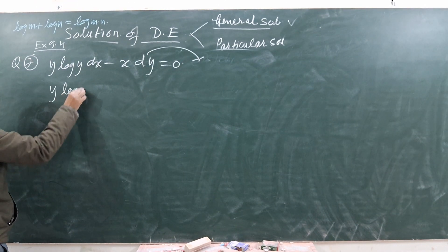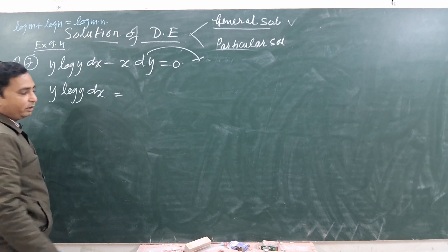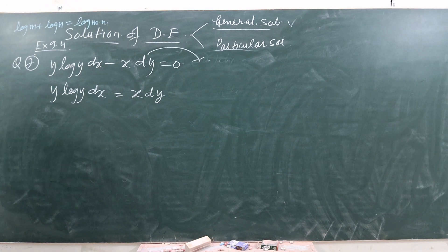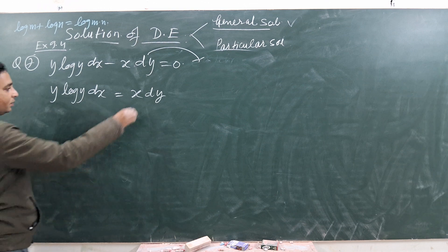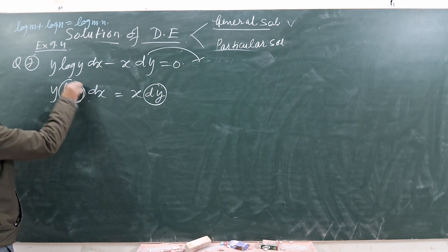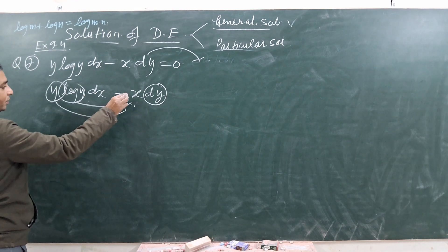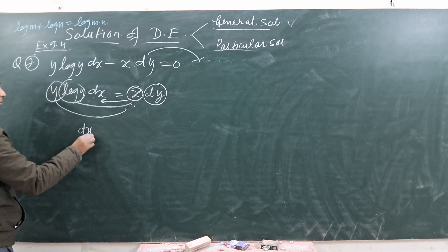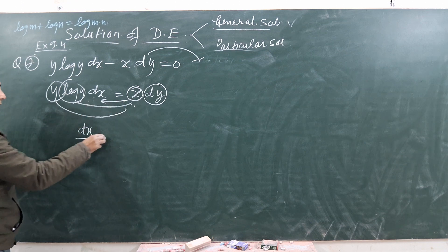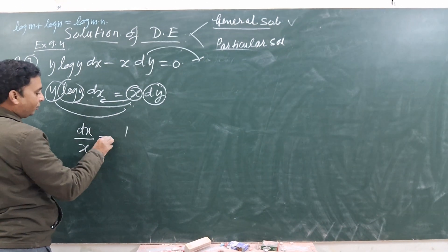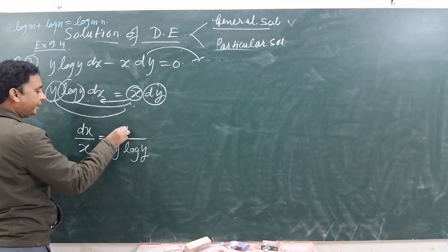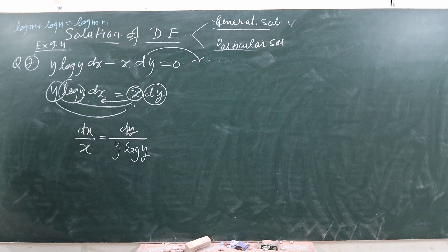y log y dx = x dy. Separating variables: dx/x = dy/(y log y). Here the y terms go on the right side with dy, and dx goes with x on the left. Variable separation ho chuka, now integrating both sides.